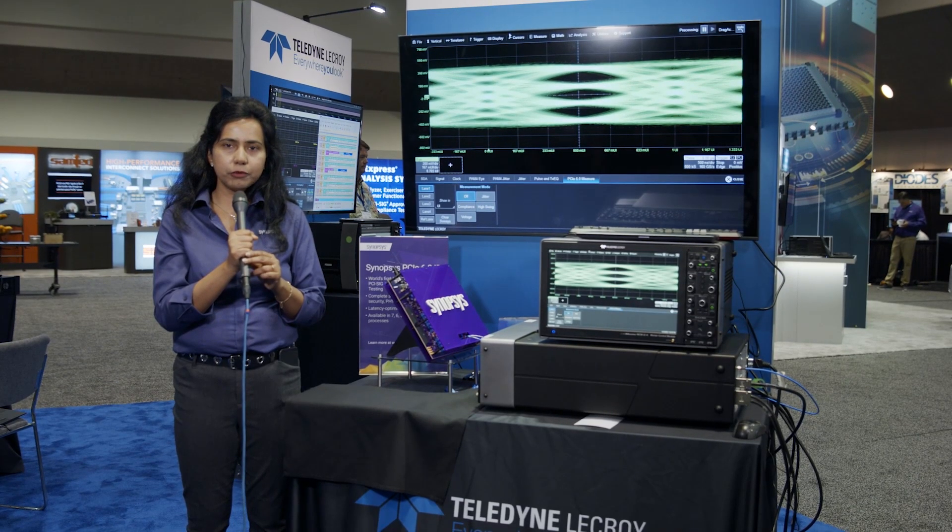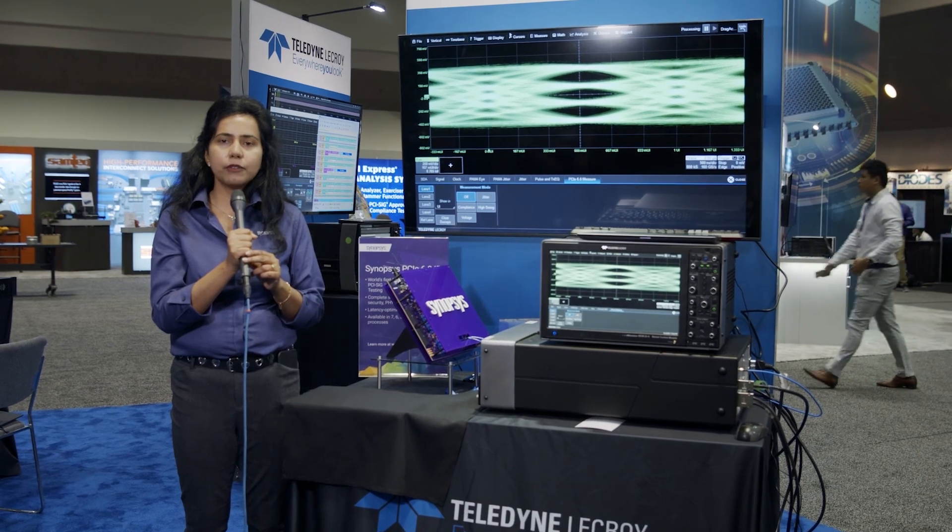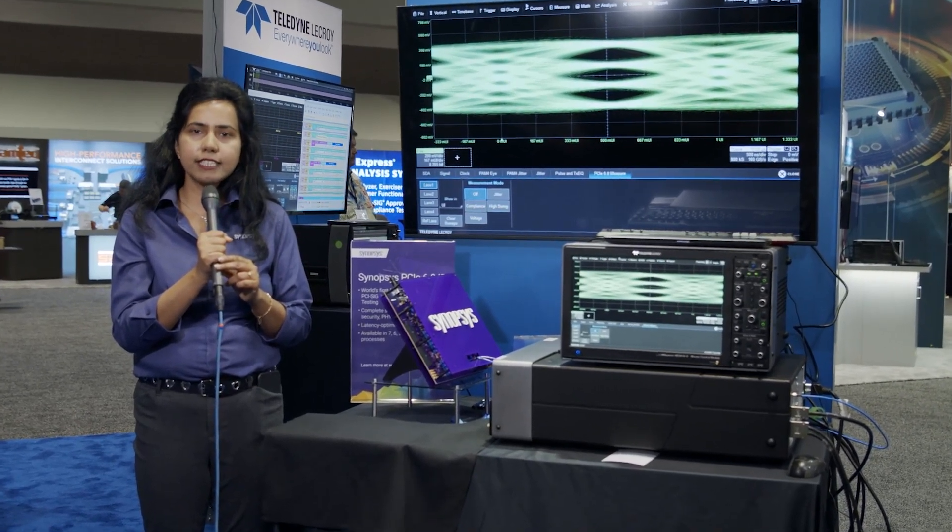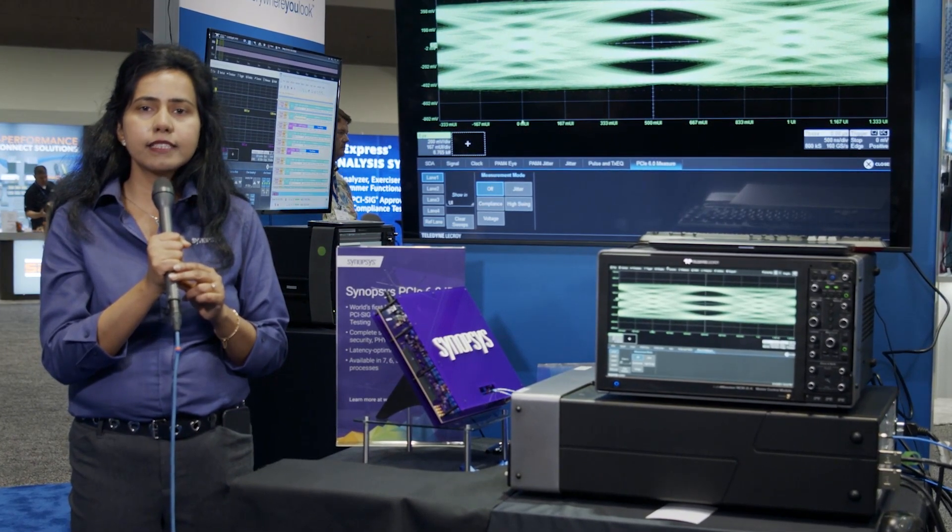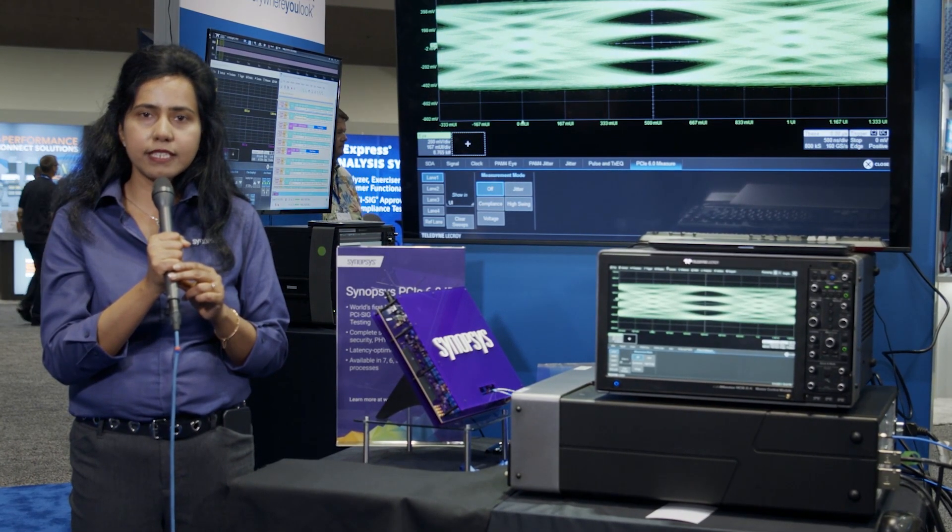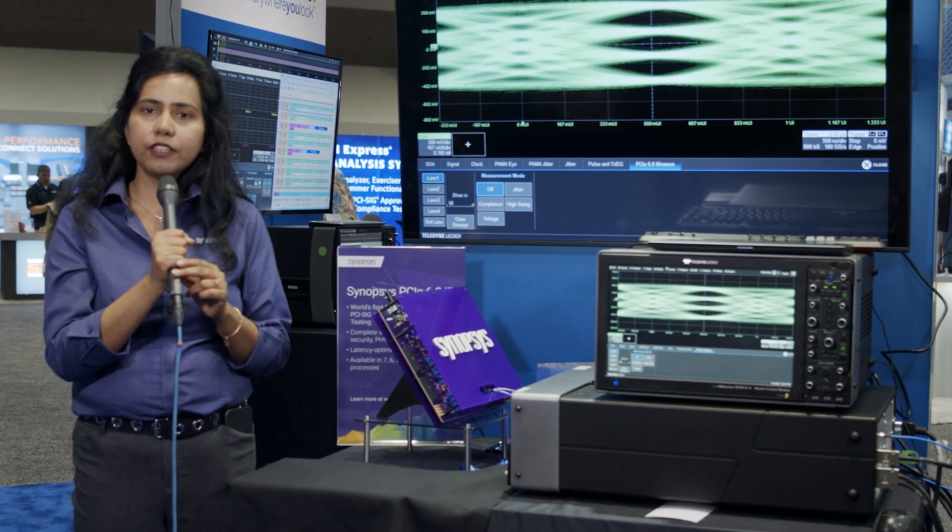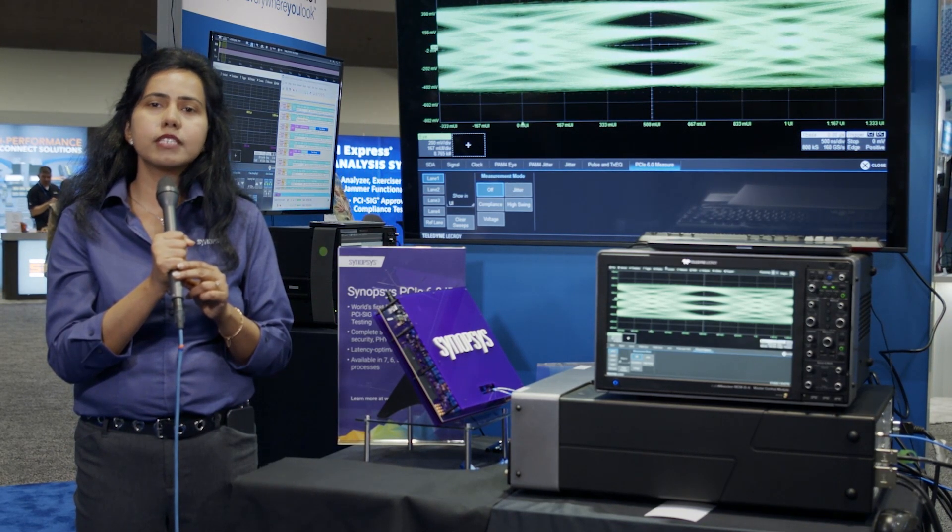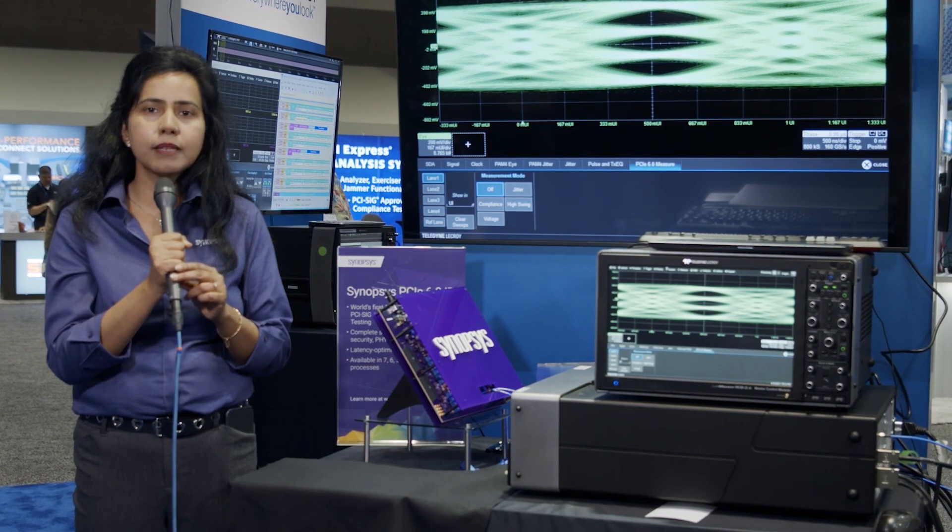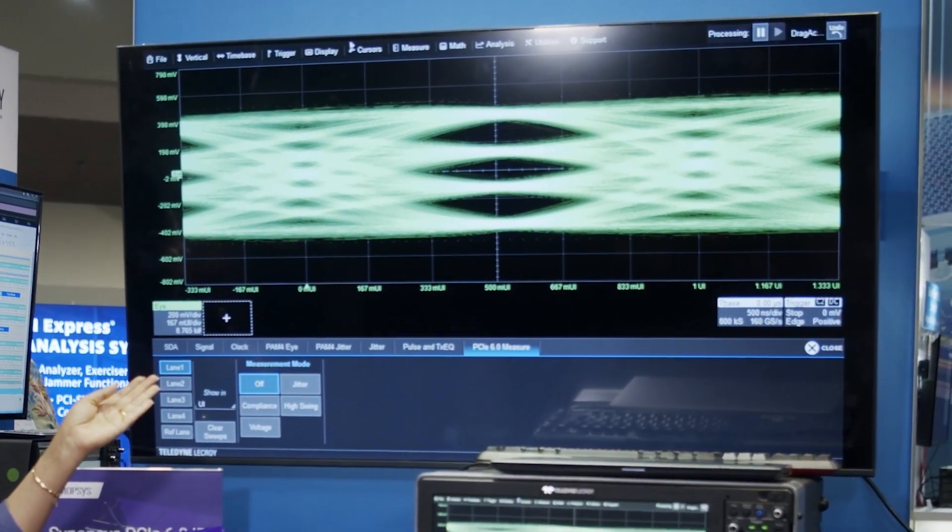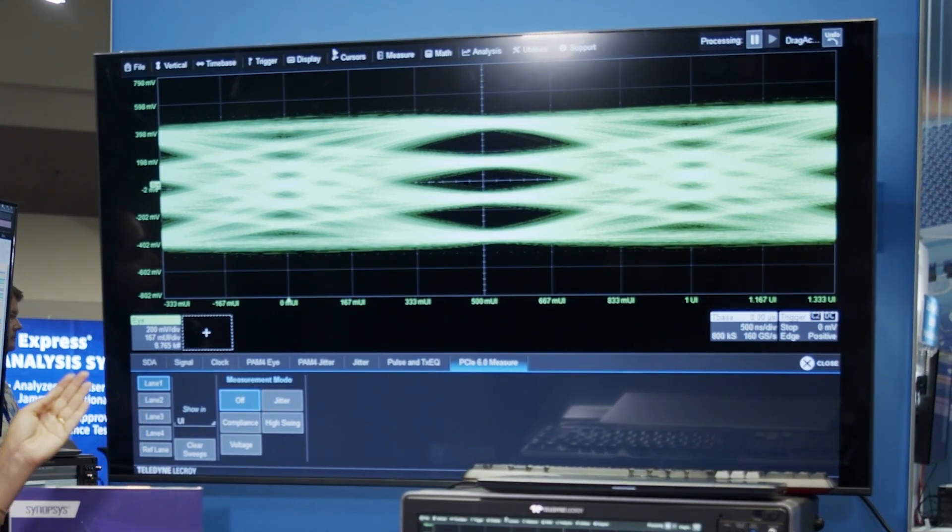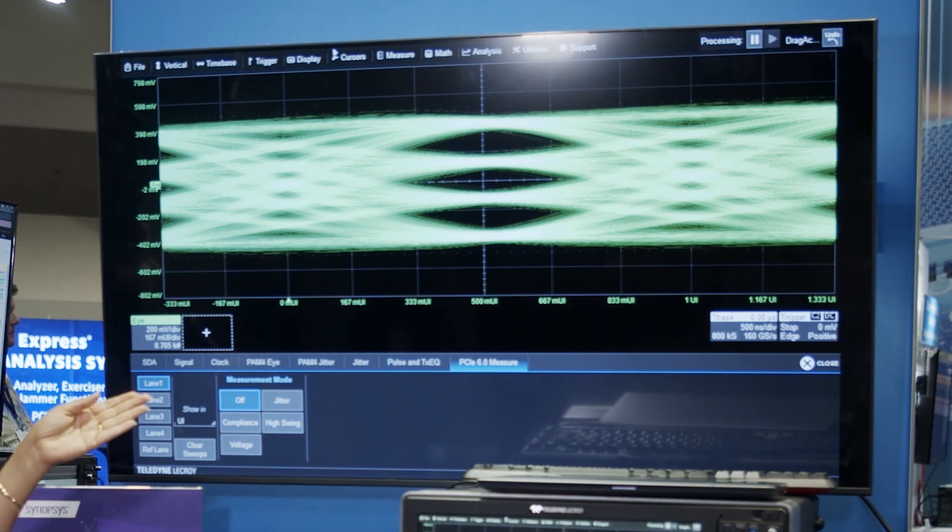We are at Teledyne LeCroy booth. We are demonstrating here our silicon proven PCIe Gen 6 IP with Teledyne LeCroy oscilloscope. As you know, PCIe Gen 6 has 10 preset settings and here we are varying the preset settings and showing the corresponding PAM4 eye characteristics. In the GUI graphical interface we are showcasing the Q0 preset and the worst preset, showcasing the PAM4 characteristics, for example the SNDR and the RLM which is multiple times better than the spec.